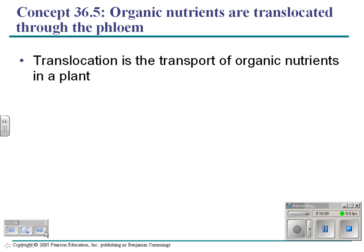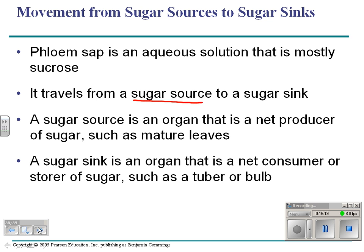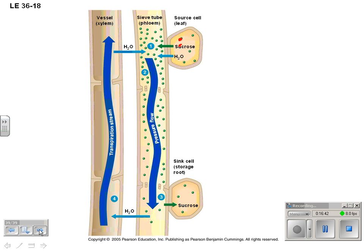What about phloem? If you see the word translocation, it's about phloem — how organic nutrients are transported in a plant. It travels from a sugar source to a sugar sink. A sugar source is an organ that produces sugar; a sugar sink is a consumer or storer of sugar, like a bulb or a root. Sucrose is produced in the leaf, diffuses or is pumped out via co-transport into the phloem. Because there's more sugar at the top, it's pushed down — like squeezing a tube of toothpaste — flows down with gravity and pressure, then diffuses into the plant cell that needs it. From source to sink.